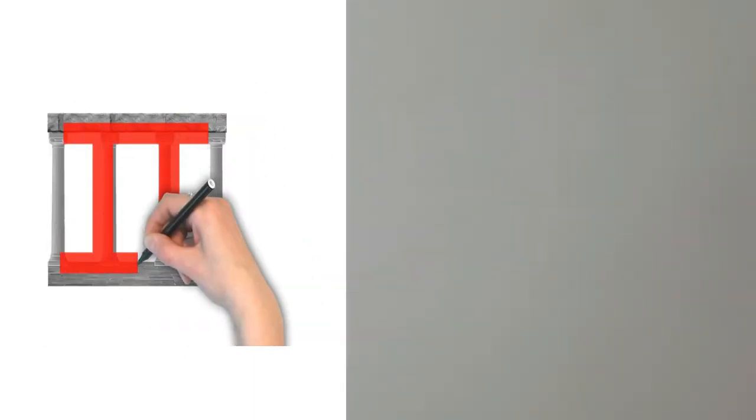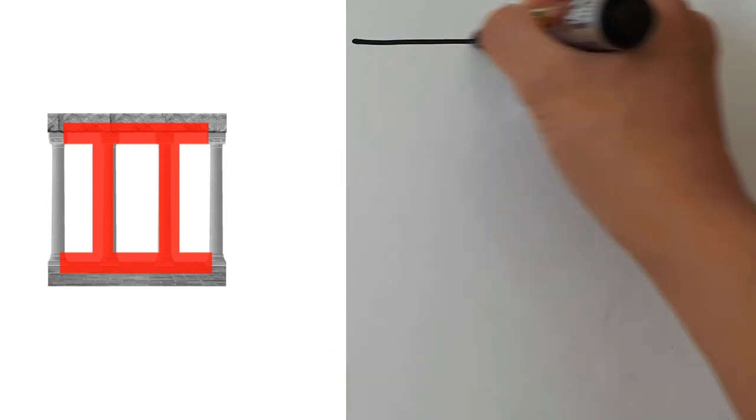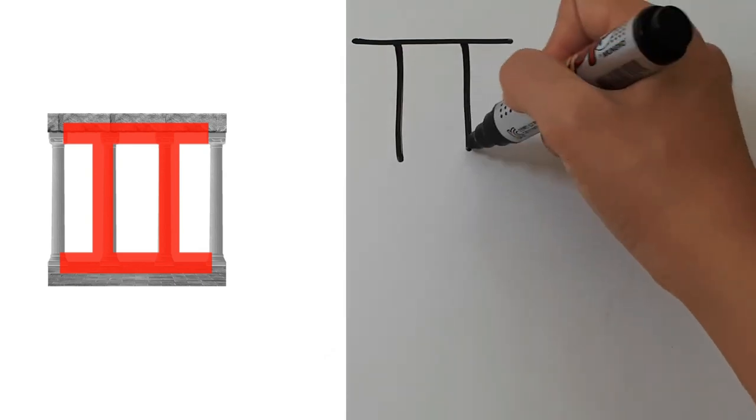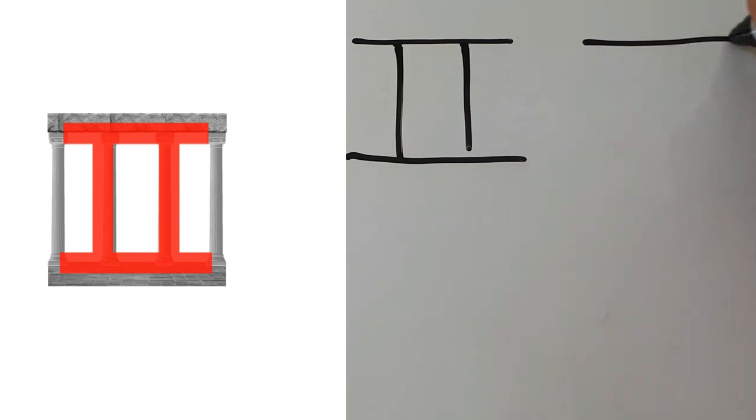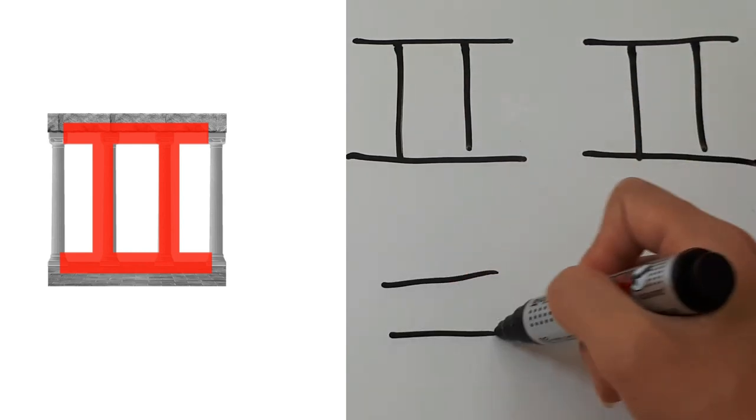ㅍ. Four strokes. One, two, three, four. One, two, three, four. Some people write it like this.